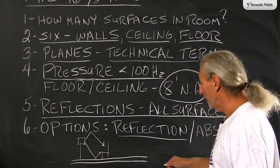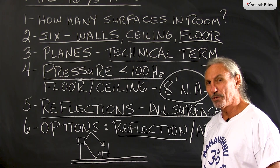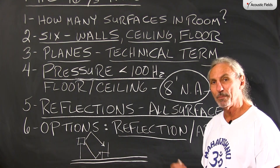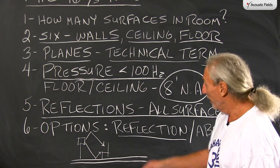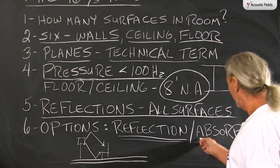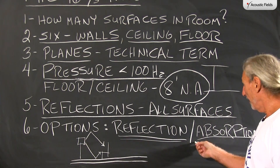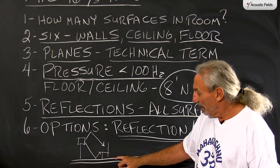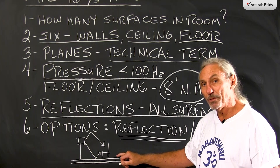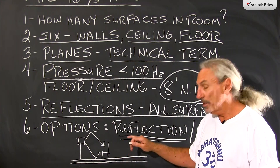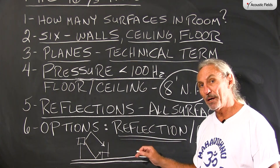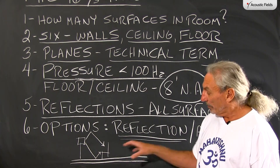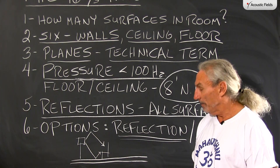Our options here are reflection and absorption. It's going to be hard to put diffusion on the floor — we'd have to have a lot of objects scattered around, and we'd be tripping and falling. So we have reflection off the floor surfaces, and then we have absorption, which we can use to treat those reflections. Everything we do to the floor matters; you can really impact sound quality with the arrangement of materials you use. That's a discussion for another time.